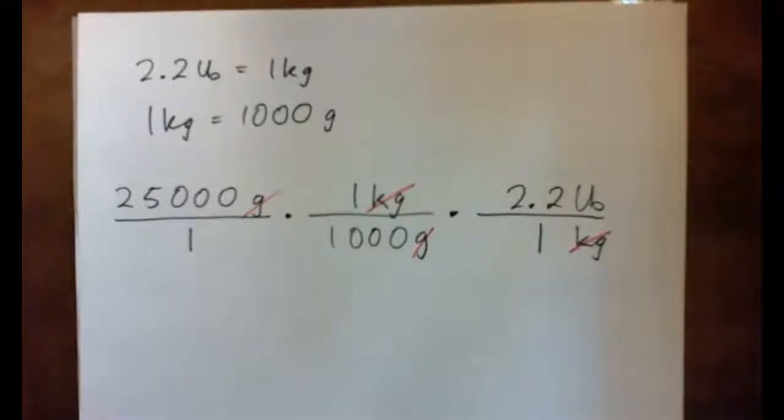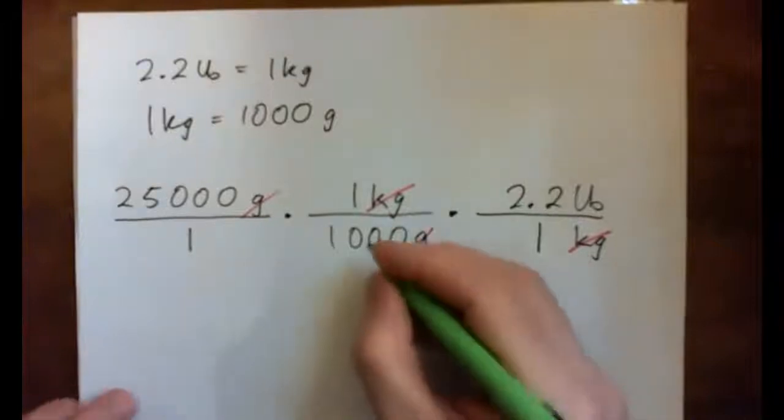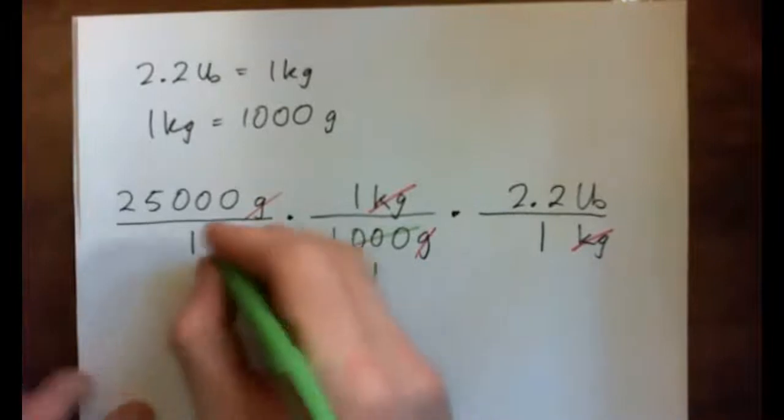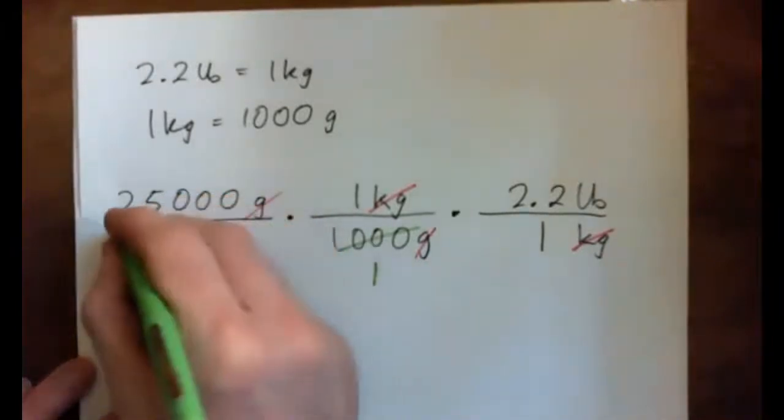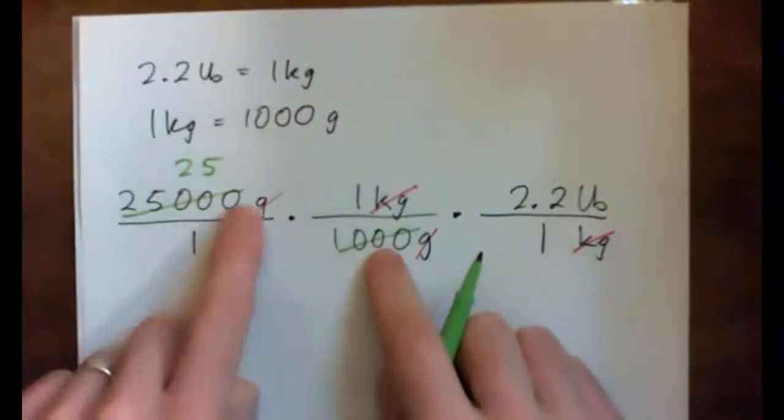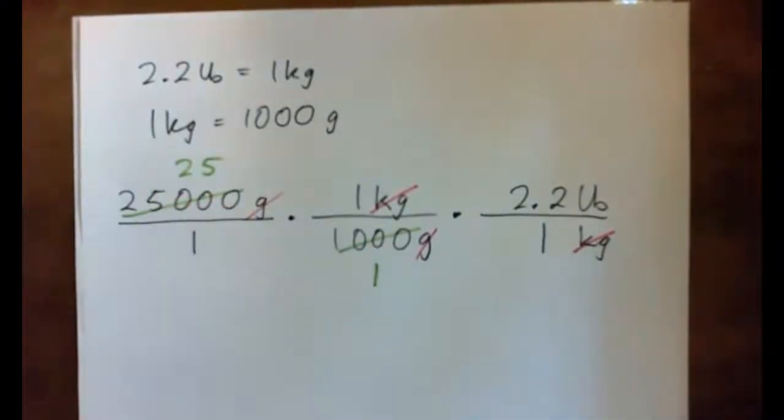So that's the unit analysis trick of doing it, and we can now mess with the numbers. Because, look, 1,000 into 1,000 goes once, and 1,000 into that goes 25 times. Or you could have just crossed off the three zeros and had 25 here and 1 here.